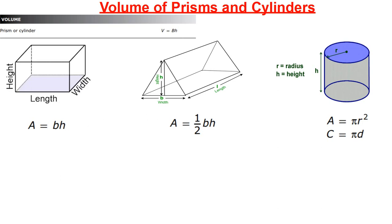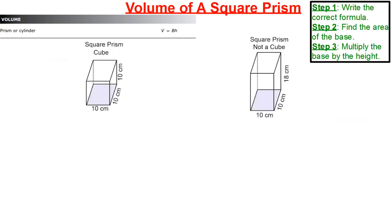All of these formulas are going to help us out when we're doing volume. Here's the first form you might see: the volume of a square prism. Not all square prisms are cubes. We have a square prism here that is a cube — 10 length, 10 width, and 10 height.